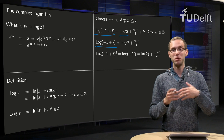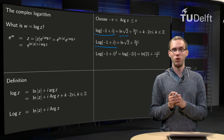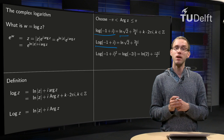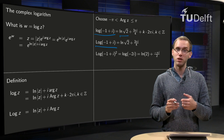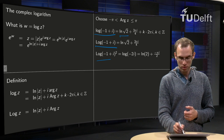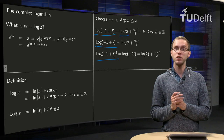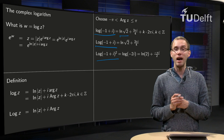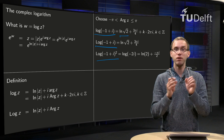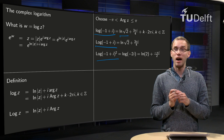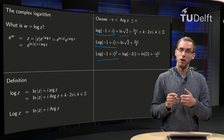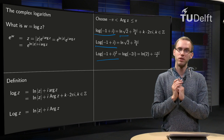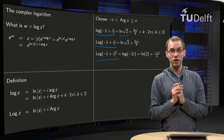What happens if we compute (−1 + i)²? That's not so hard: (−1 + i)² = (−1)² + i² + 2(−1)(i) = 1 − 1 − 2i = −2i. So if we compute the capital Log of (−1 + i)², that means we have to compute the capital Log of minus 2i, which yields ln(2) — the norm — plus i times the capital argument. For minus 2i, the argument is minus π/2. So there we have the capital Log of (−1+i)².